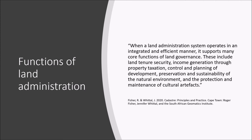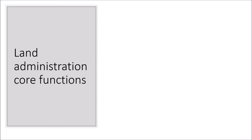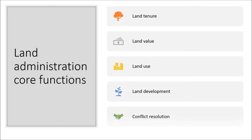I quote: 'When a land administration system operates in an integrated and efficient manner, it supports many core functions of land governance. These include land tenure security, income generation through property taxation, control and planning of development, preservation and sustainability of the natural environment, development and the protection and maintenance of cultural artifacts.' We can group these core functions into four categories: land tenure, land value, land use, and land development. We should remember the importance of conflict resolution as integral to all of these functions.